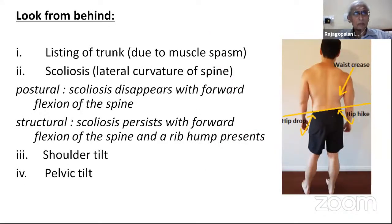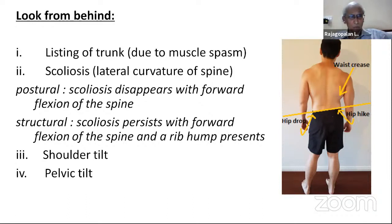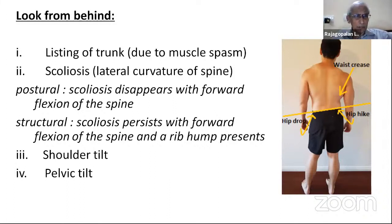When examining, look for a list, then look at scoliosis. Ask the patient to bend forward and touch the floor. If the scoliosis disappears it is postural; if it persists and a rib hump appears, it is structural. This is Adam's test, used in school screening. Other than scoliosis, look for shoulder tilt and pelvic tilt — particularly important in deformity cases, as scoliosis can be kept as a short case in DNB exams.